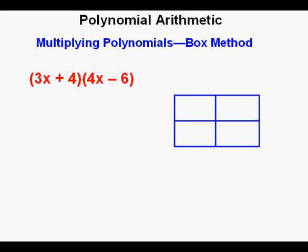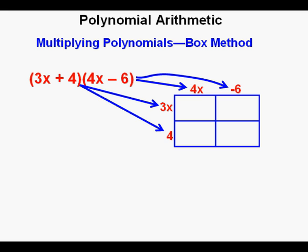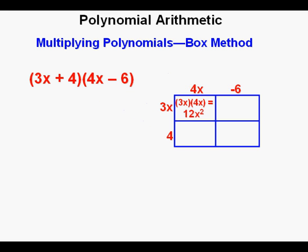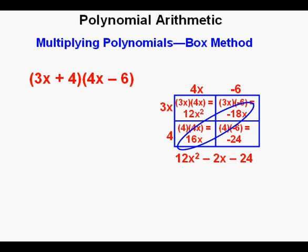For the box method, we construct a box according to the types of polynomials we are given. For a binomial times a binomial, we have a 2 by 2 box that separates into 4 cells. We place the terms for one binomial on top—I've placed 4x and -6 on top. On the side, we place 3x and 4. In the upper left cell, we place the product of 3x and 4x, which is 12x². In the upper right cell, 3x × -6 = -18x. In the lower left cell, 4 × 4x = 16x. In the lower right cell, 4 × -6 = -24. We then combine like terms: 16x and -18x, and that is -2x, so our answer is 12x² - 2x - 24.